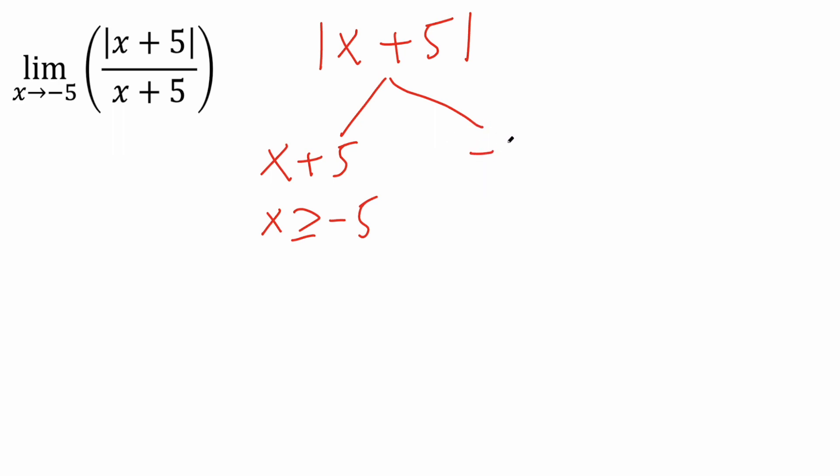And it behaves like negative parentheses x plus 5 whenever x is less than negative 5. So let's try this. If x is negative 5, we get negative 5 plus 5 is 0. Likewise, negative 5 plus 5 is 0. It matches.